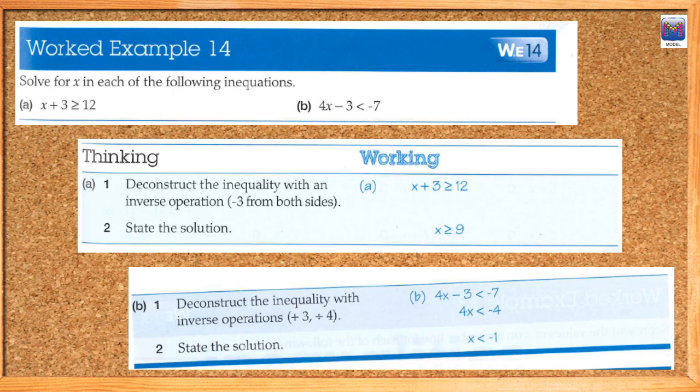Same with the other one. 4x minus 3 is less than 7. It's just like our equations. We get rid of that one first, the constant. Then we deal with the coefficient, the 4 on the x there. Just like I spoke about in the last video. So again, the first thing I'm going to do down the bottom here, I'm going to get rid of the minus 3.